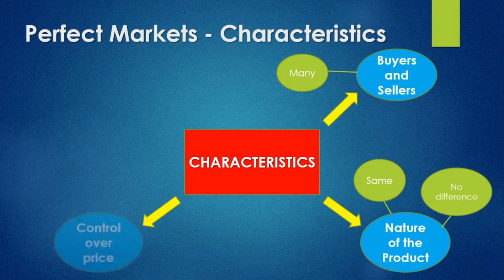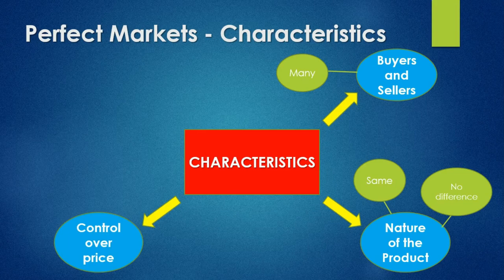The next characteristic we look at is the control over price, and whether or not perfect markets have control over price. In a perfect market, there's no influence — they are known as price takers. So they take the price as it is given to them.